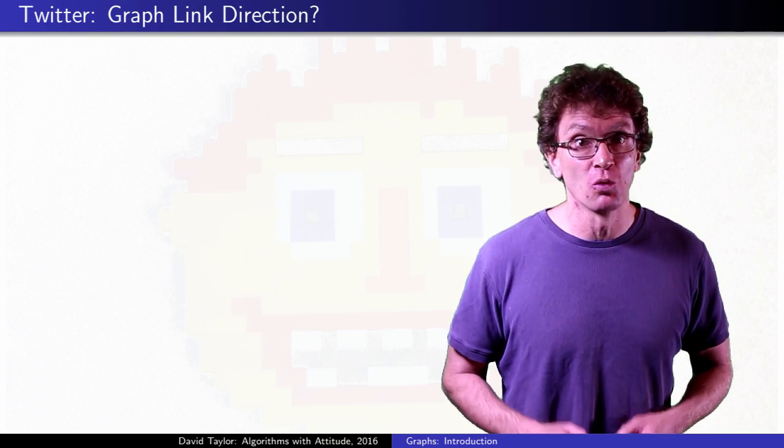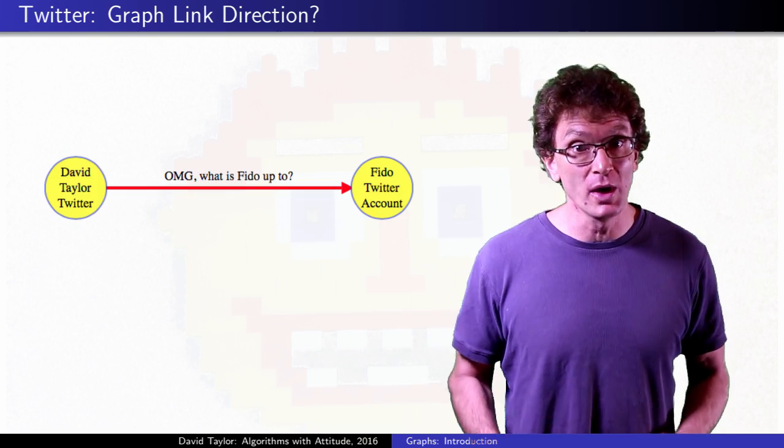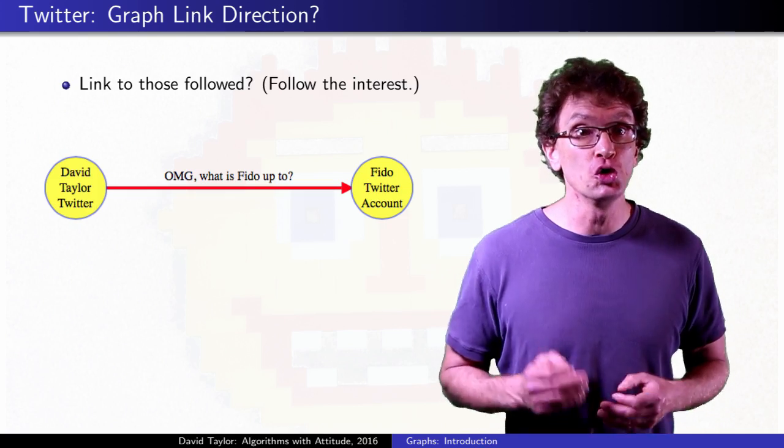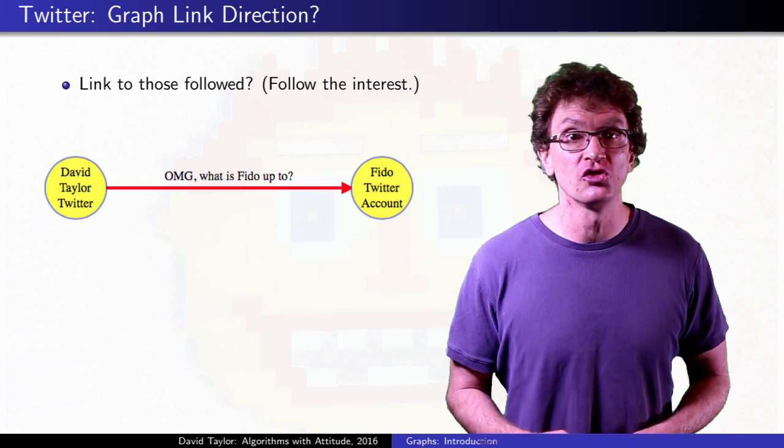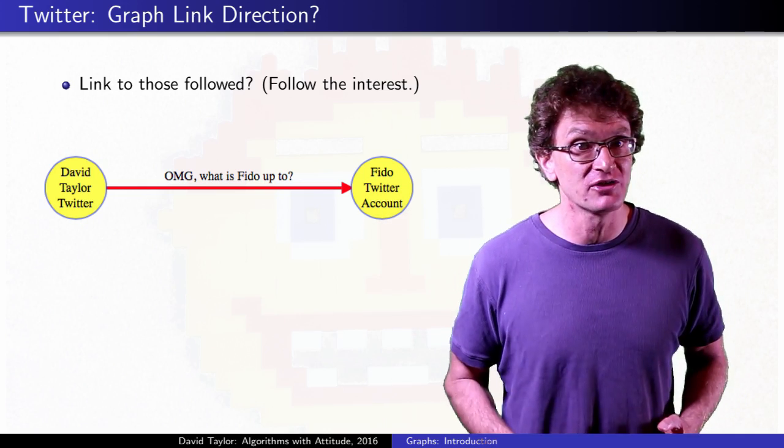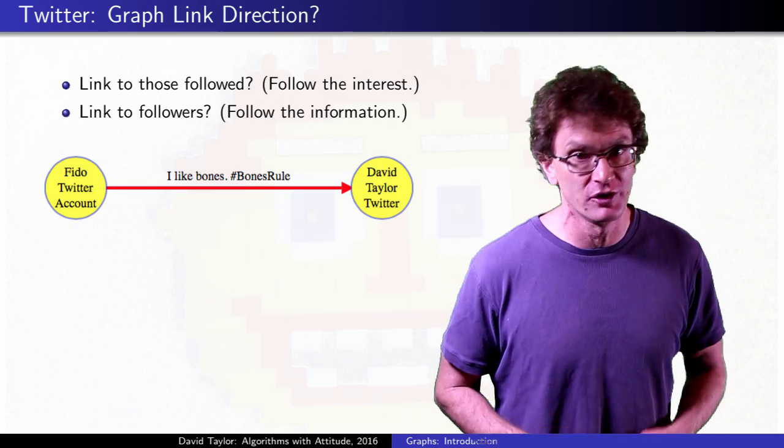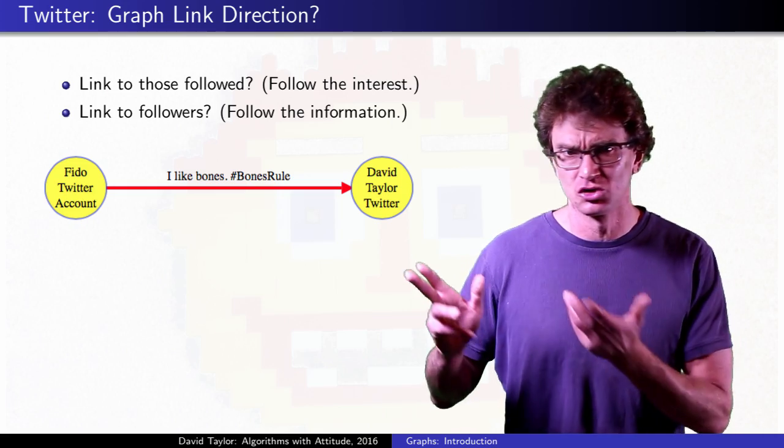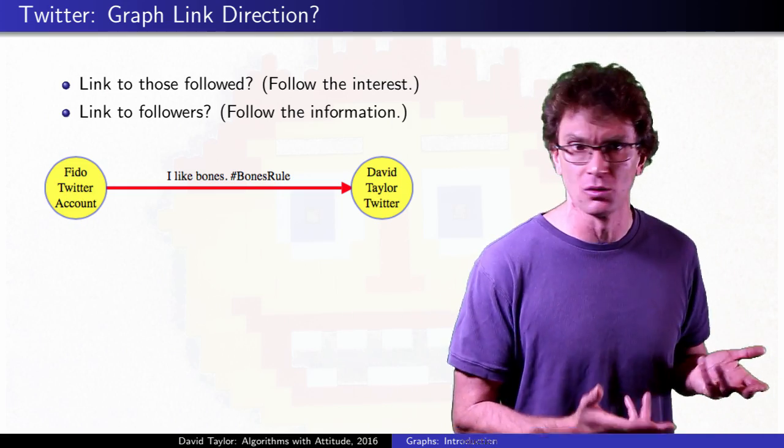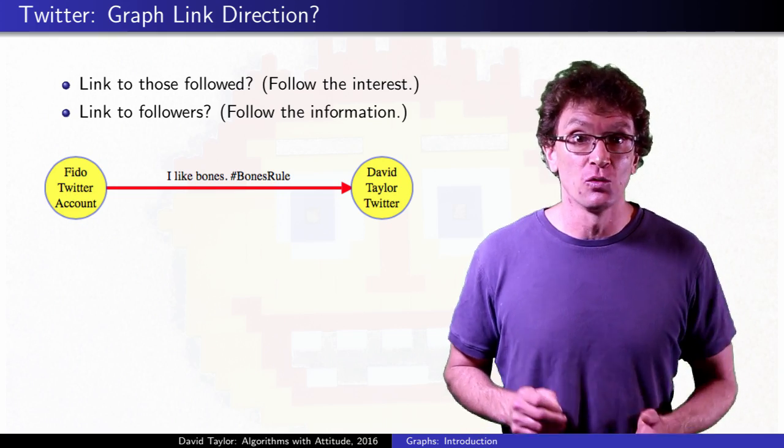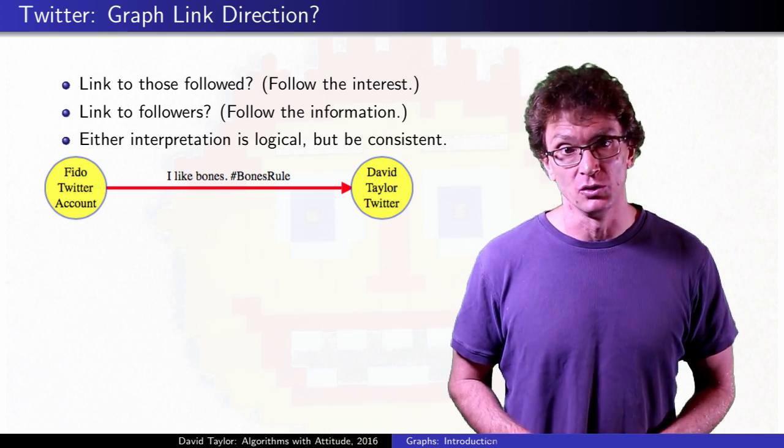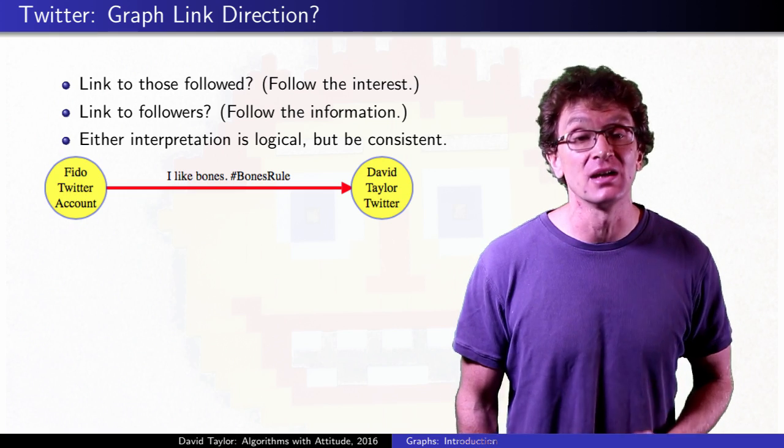Depending on what you're modeling, sometimes edge direction won't be so obvious. In Twitter, you might want to think about who you follow, and model an account with the edges to those the account follows. Or maybe instead, you want to think about the flow of information, from the twit to all of their followers. When you model that graph, you need to decide what edge direction you want to use. Either way is fine, but be consistent.